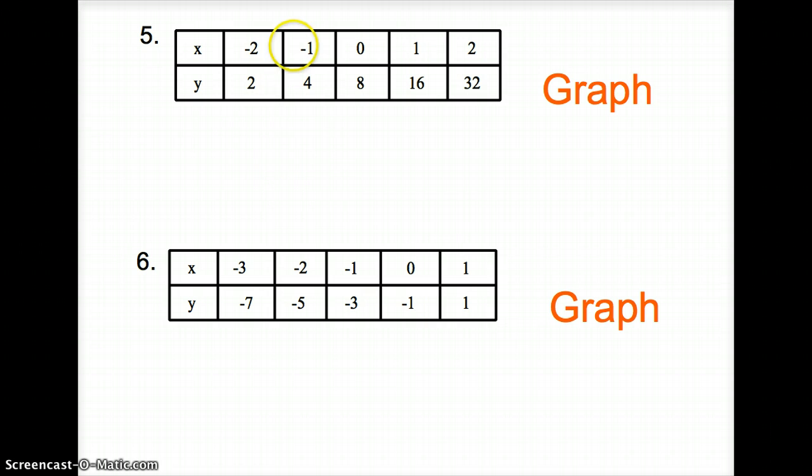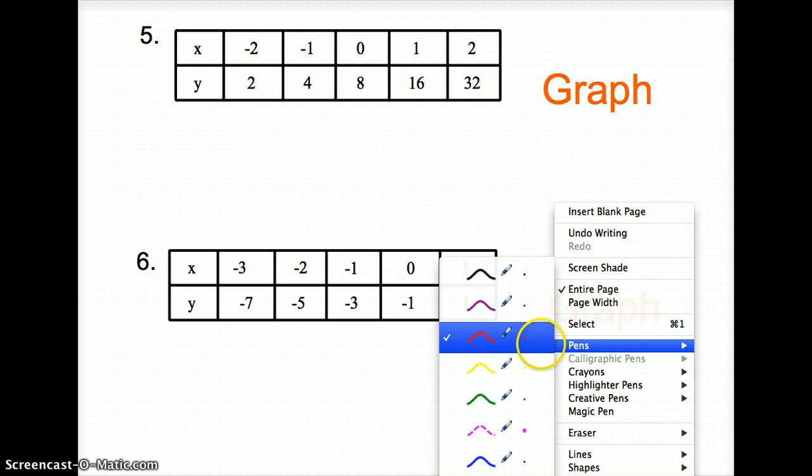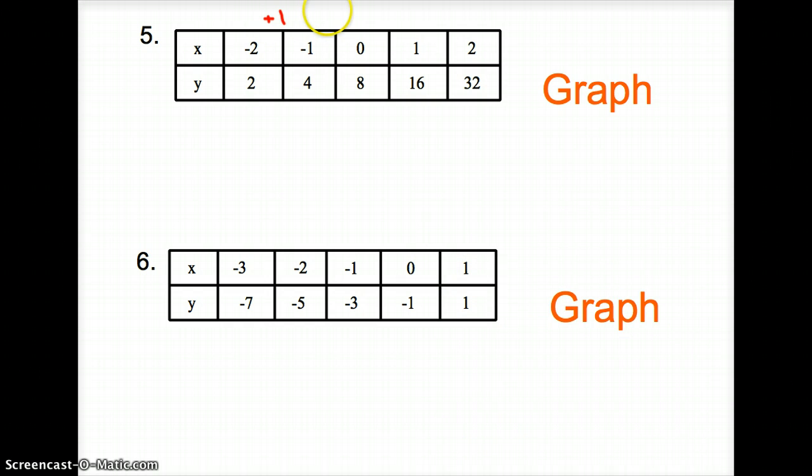Next, let's take a look at 5. Do our x values increase consistently? Do we go from negative 2 to negative 1? We are increasing by 1 each time. So that's a good thing. Now, how do we go from 2 to 4? We could add 2, but does that work from 4 to 8? No, it doesn't. So now we're not adding 2 anymore.